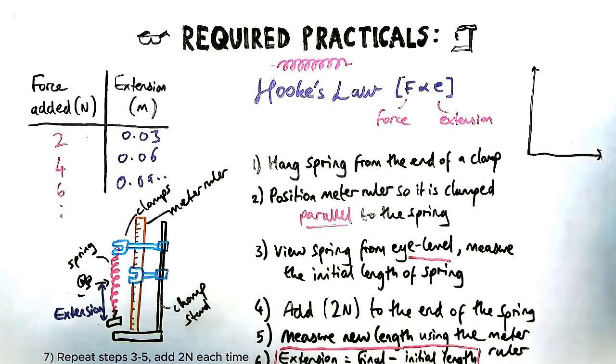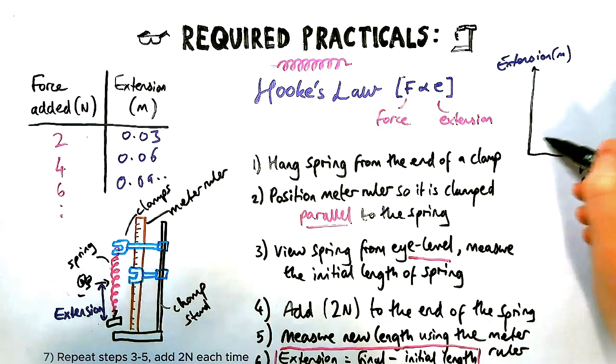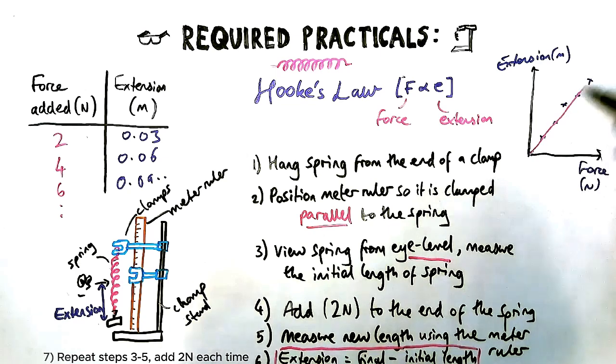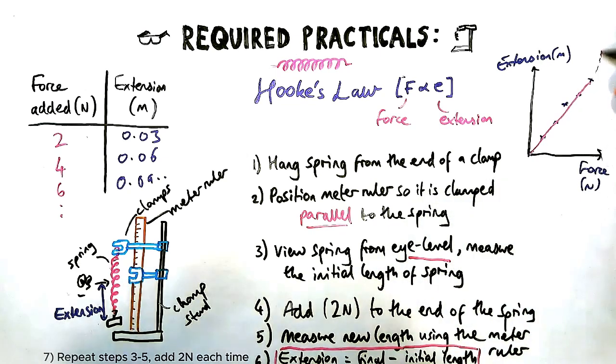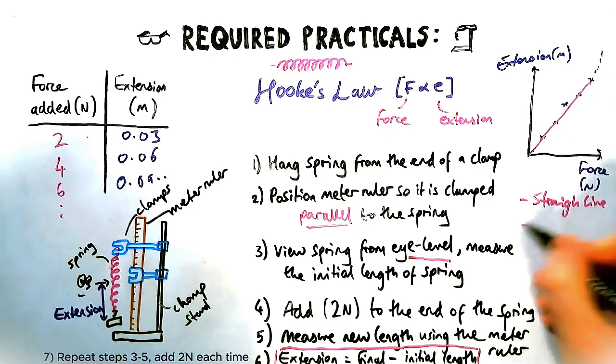Once you've got your results, you should be able to plot a graph. This graph is quite a nice graph, you should find. It gives a nice neat straight line. So you've got force, independent variable, on the x-axis, extension on the y. A line of best fit should go through the origin like so. It can curve up a little bit at the end, and that just means it's gone past its elastic limit.